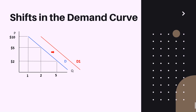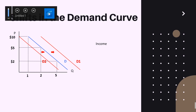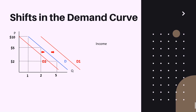In the opposite situation, suppose you realize you've lost your $10 and now only have $5. You can no longer afford pizza at $10, and at $5 you can only afford one slice. So income shifts the demand curve, and there is a positive correlation between income and quantity demanded for most products.